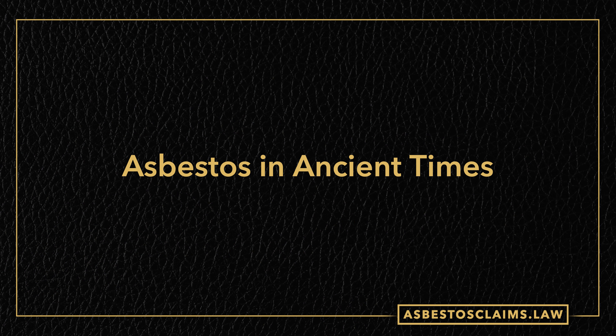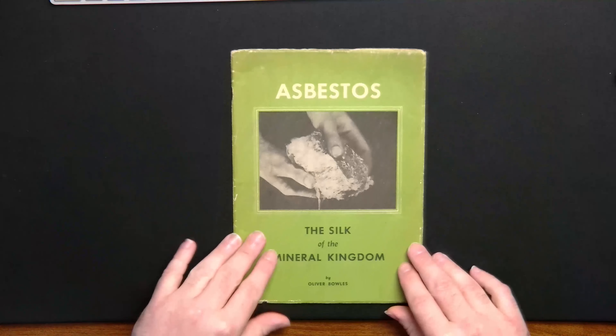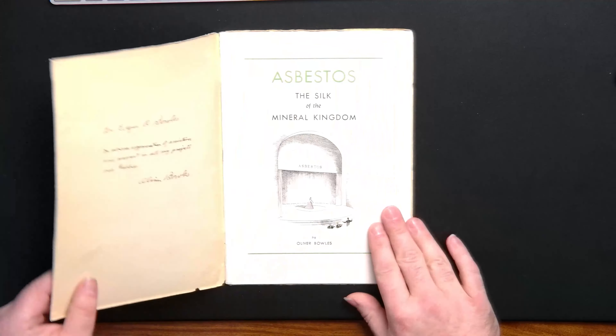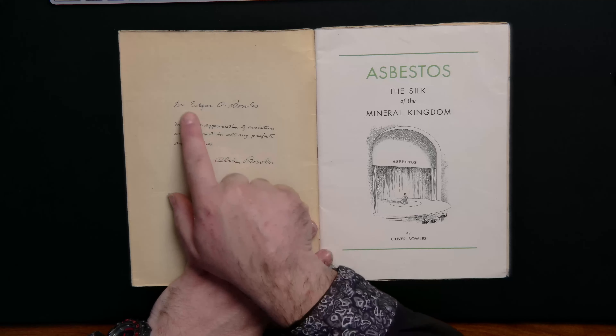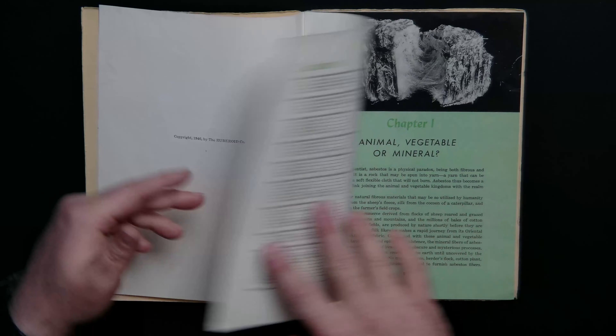Now that we've talked in depth about the minerals themselves, let's shift gears and talk about asbestos in ancient times. I'm fortunate enough to have this book put out by Oliver Bowles, a very reputable geologist and leading person in the study of the mineralogy of asbestos. This is an autographed copy from Oliver Bowles to his son, Dr. Edgar O. Bowles, in sincere appreciation of assistance and support. We're going to look at the section on asbestos in ancient history, since this was written by a person whose professional life was dedicated to the study of asbestos.